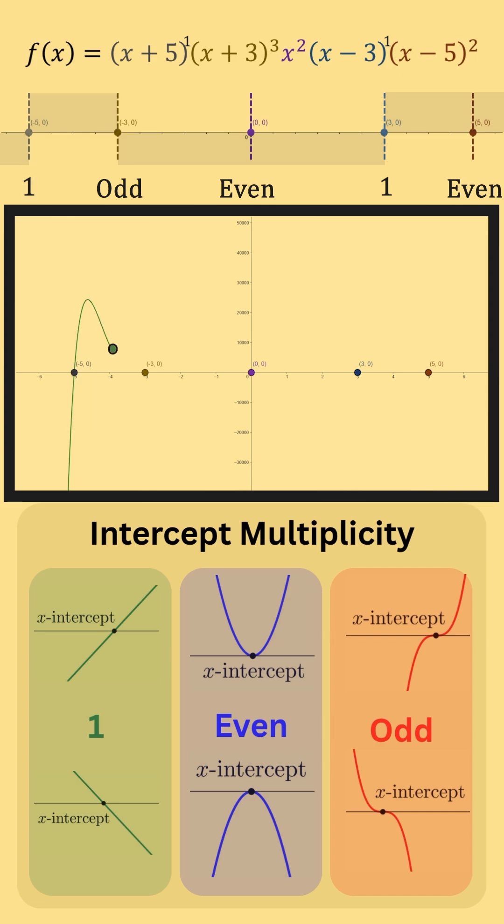At x equals negative 3, our multiplicity is odd, so we sort of flatten out but cross the x-axis. At x equals 0, our multiplicity is even, so we kiss the x-axis and return in the same direction.